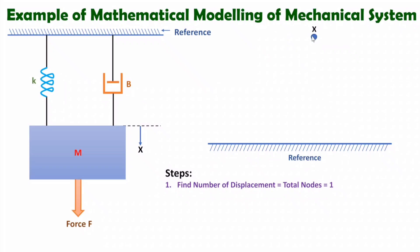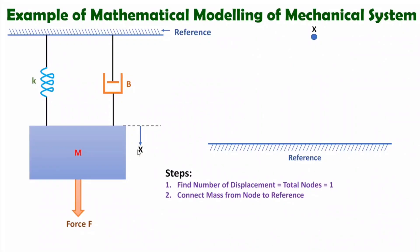Since there is only one displacement, the equivalent model will have only one node. Let us place one node here and name it x. In the second step, we handle the mass. Here we have only one mass, so we connect this mass from the node x to the reference.